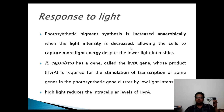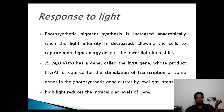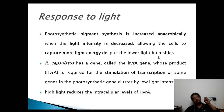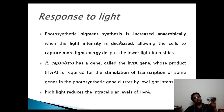This synthesis is also regulated by light — when the light intensity is decreased, there is increased synthesis of photosynthetic pigment. This is because if light intensities are decreased, more pigments are required to receive that light, and therefore the decrease in light intensity increases the transcription of genes involved in synthesis of photosynthetic pigments.